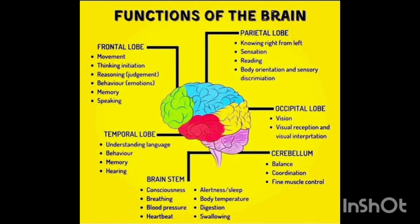The temporal lobe also plays a key role in behavior, memory, and hearing. The last lobe, the occipital lobe, plays an important role in vision, visual reception, and visual interpretation.